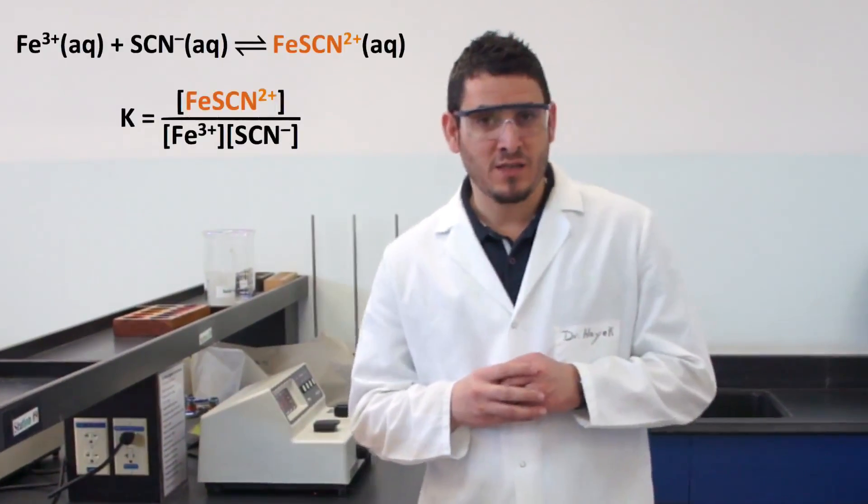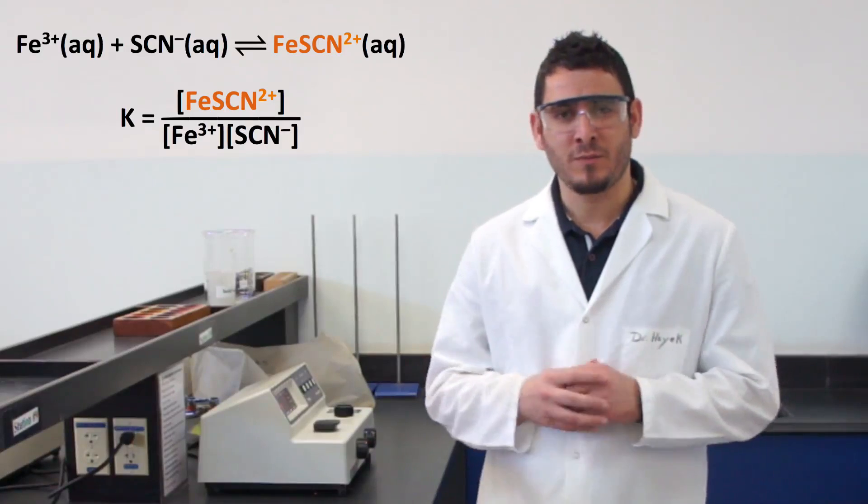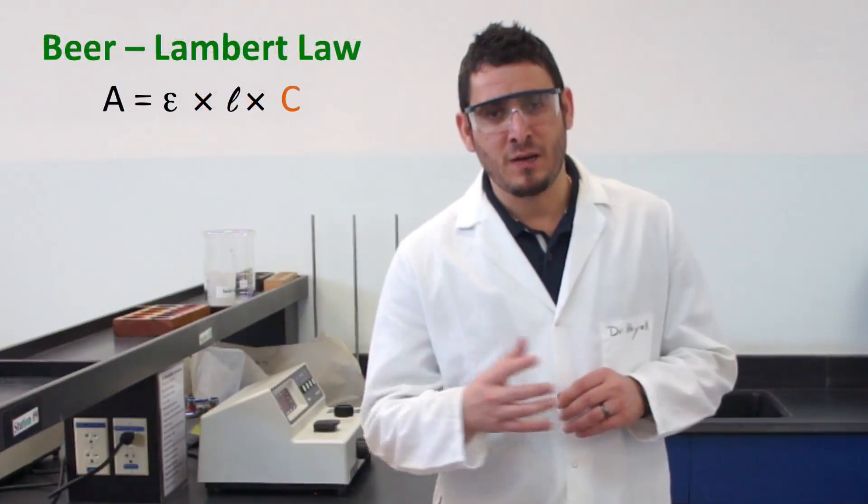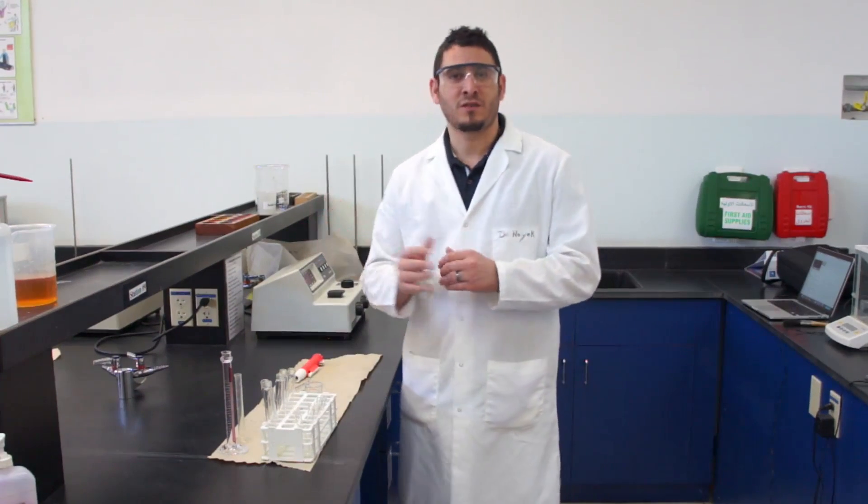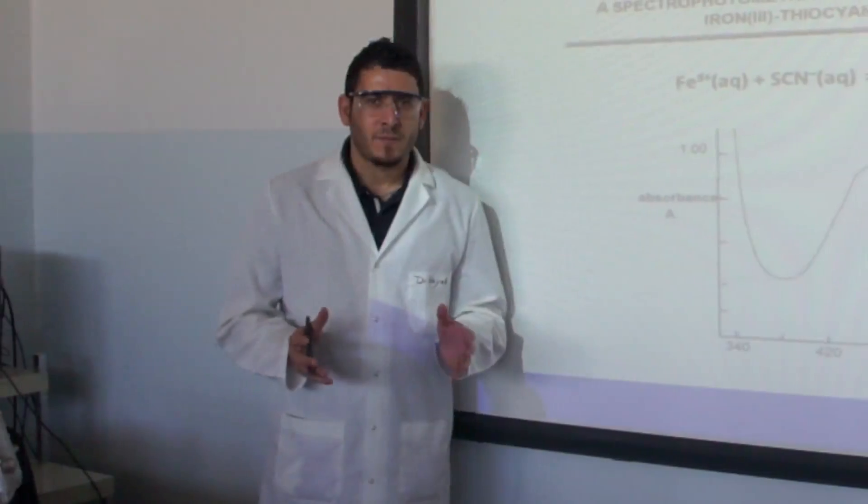Hi, in this experiment I'm going to show you how you can determine experimentally the equilibrium constant for a systematic equilibrium using Beer-Lambert law and a spectrophotometer. Let's go and discuss the theory and the objective behind this experiment, then you will come back and I will show you the details on the experimental procedure.